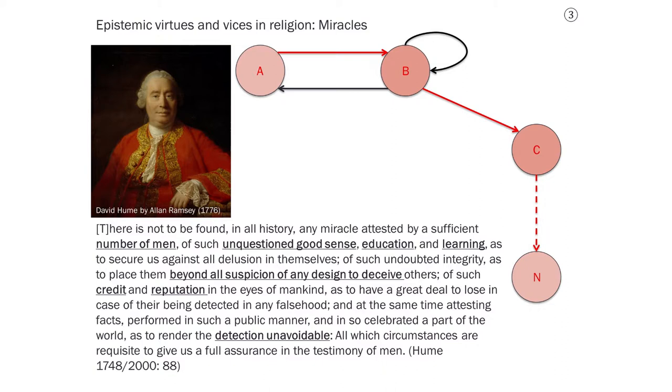He says that there should be multiple sources, so he talks about the number of men. And then he also talks about the virtues that they should have, which include good sense, education, learning, as well as credit and reputation so that they have something to lose if we find out that they were lying or mistaken.